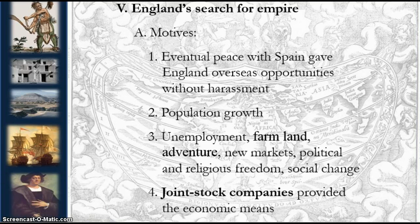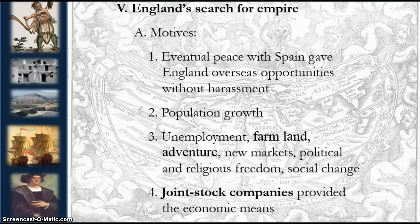Another key motive was the joint stock companies — one of the most significant inventions of Western civilization. They provided the financial means to get colonists to come overseas. Investors pooled resources for sea expeditions. Joint stock companies disperse risk by allowing multiple investors from all walks of life to invest extra capital in exploring and expeditions. Examples include the East India Company and the Virginia Company. It's basically the basis of our stock exchange in the United States today.